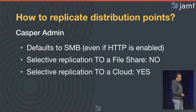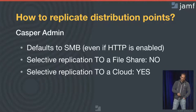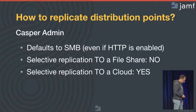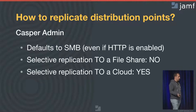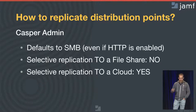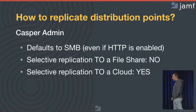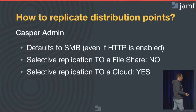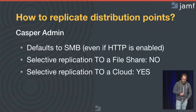Selective replication is only from a local file share towards cloud and not the other way around. Casper Admin over SMB across multiple locations and isolated networks might not be the most efficient way to replicate content to all your distribution points. So you will have to find another way of copying all that data. Depending on the infrastructure you already have in place, you might have a preference on how you're going to do that replication.